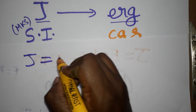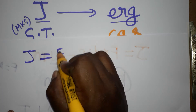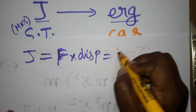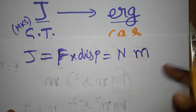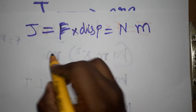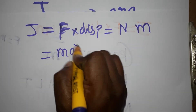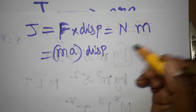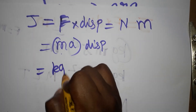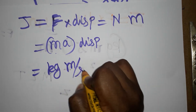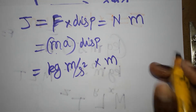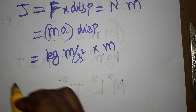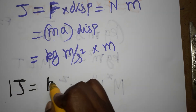First we will see what is a Joule. Joule is an energy unit: energy is equal to force into displacement. Force unit is Newton, and displacement SI unit is meter. Newton is mass into acceleration, so mass is kg, acceleration is meter per second squared, and displacement is meter — giving us meter squared.